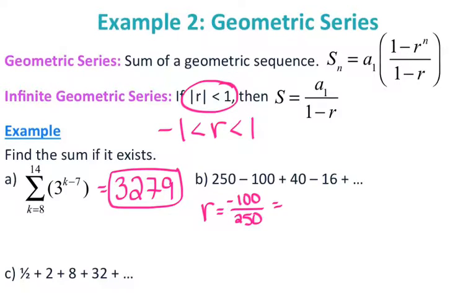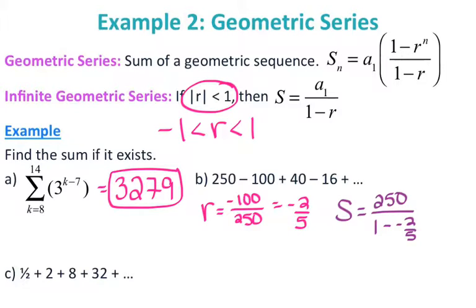For example B, I have negative 100 divided by 250, which gives negative two-fifths. Is negative two-fifths between negative 1 and positive 1? It is, so I can find the sum. Using the formula, S equals the first term — which is 250 — over 1 minus the ratio, which gives 1250 over 7.